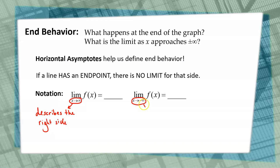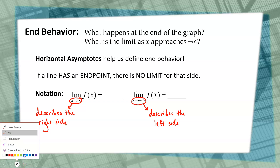And as x approaches negative infinity, you can deduce that that's going to describe the left side. So what about those other blanks — what do those refer to? Those are going to refer to what's happening along the y-axis. Because as we read the graph from left to right, when we look at the right side and the left side, we want to describe what value the graph is approaching vertically.